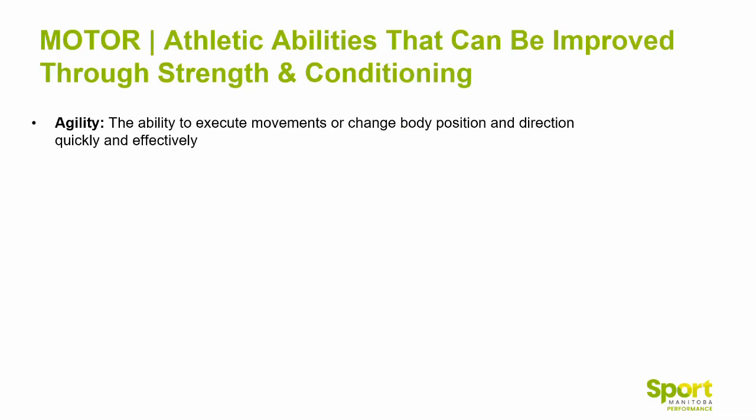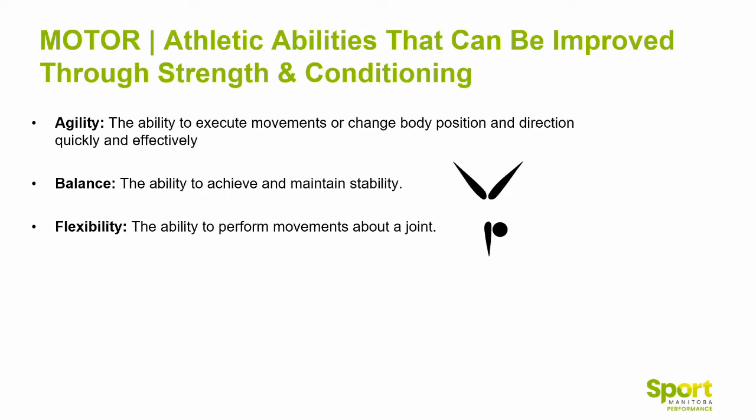Motor or biomotor abilities relate to body movements. Agility is the ability to execute movements or change body position and direction quickly and effectively — agility is more reactionary, responding to another player or where a ball is going. Balance is the ability to achieve and maintain stability, and flexibility is the ability to perform movements around a joint.